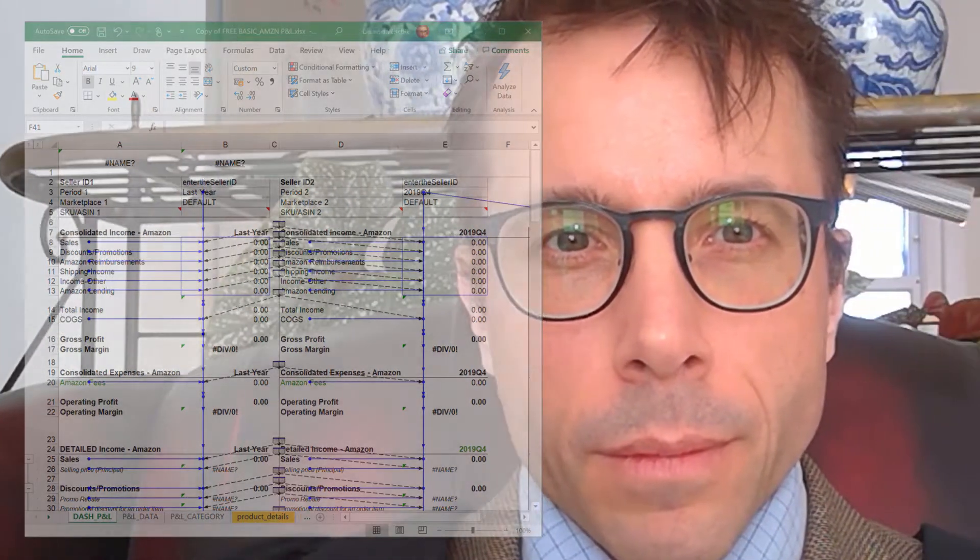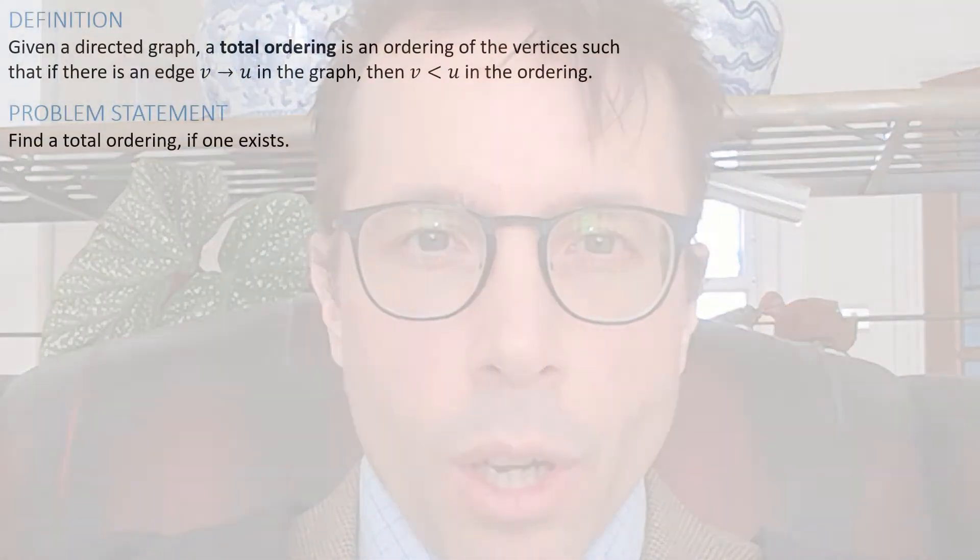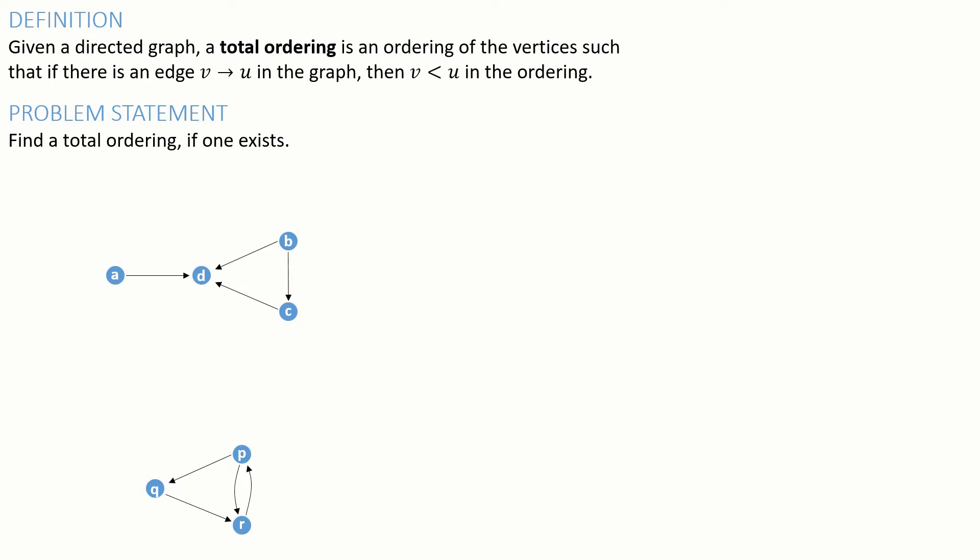That's what this video will be about. The algorithm we'll study is called topological sort. Here's a problem statement: pause the video, copy out the definition, and then try to find an ordering for these two graphs. Press play when you're ready.